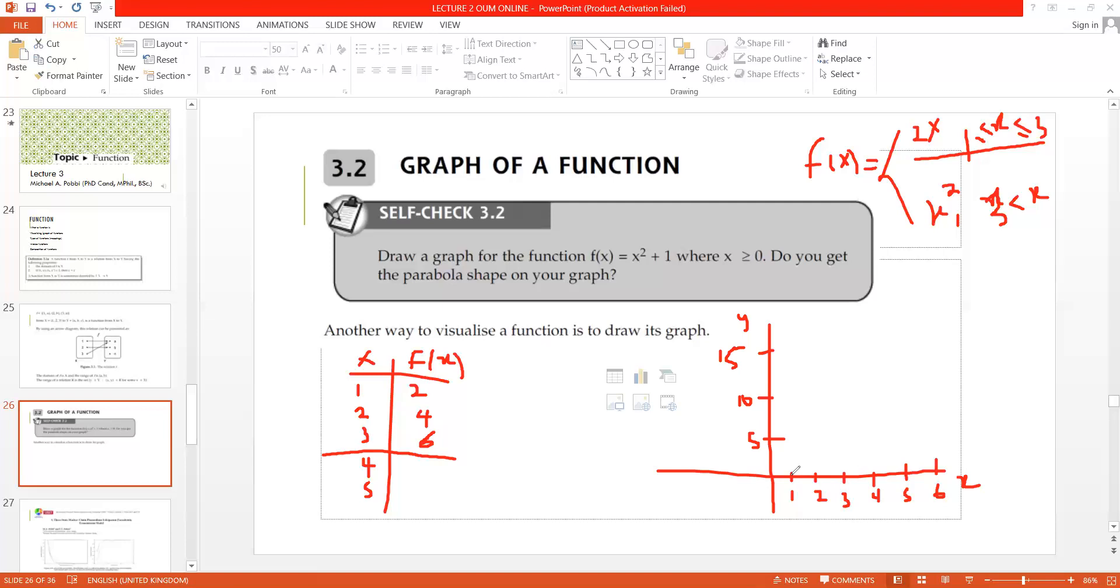So when x equals 1, y is 2. We plot that, x1 and y2. When x equals 2, y is 4, so we plot that here. x equals 3, y is 6. We plot that here. So from the plots we have, we can clearly see that this is a straight line. This is a straight line graph because the function is 2x.